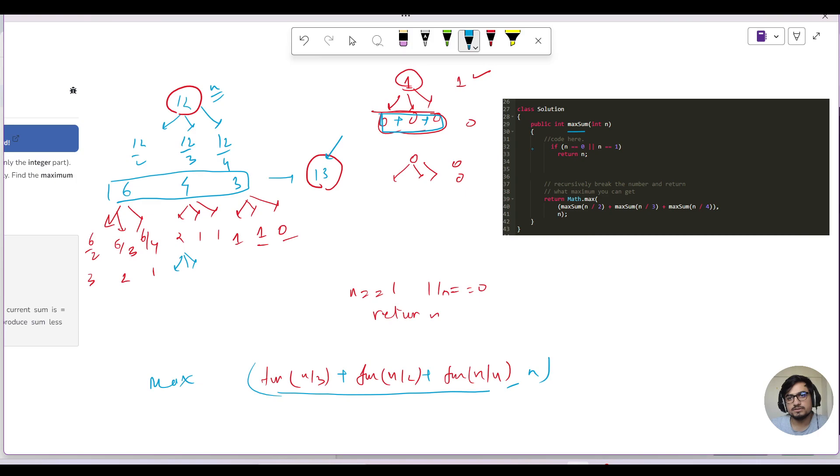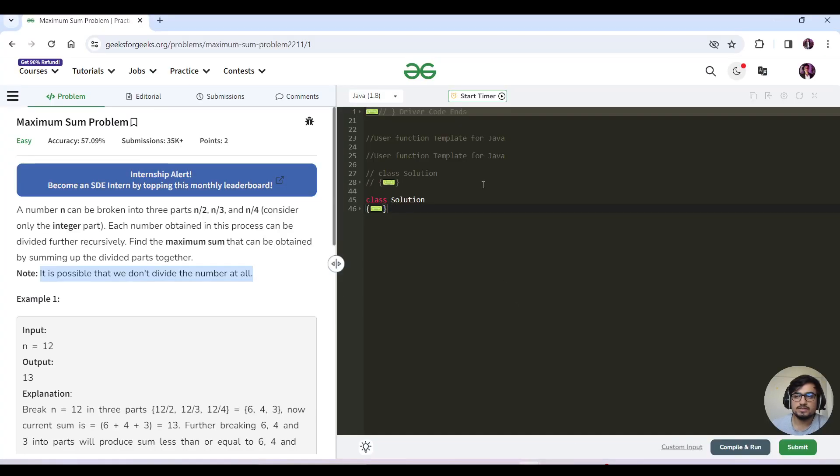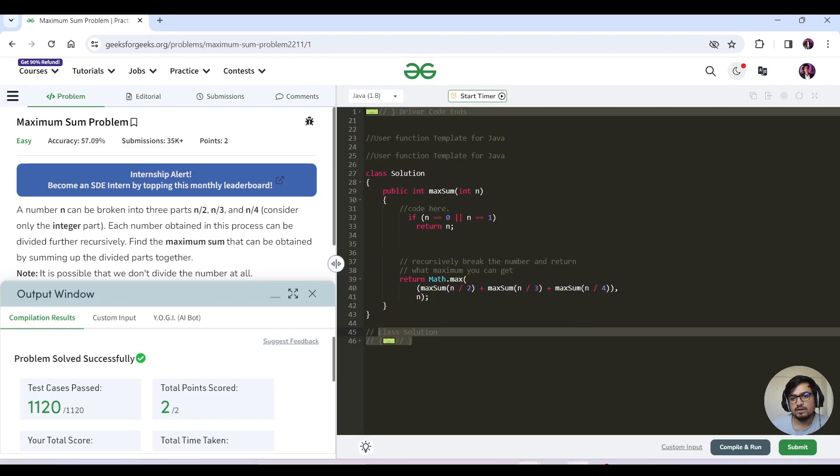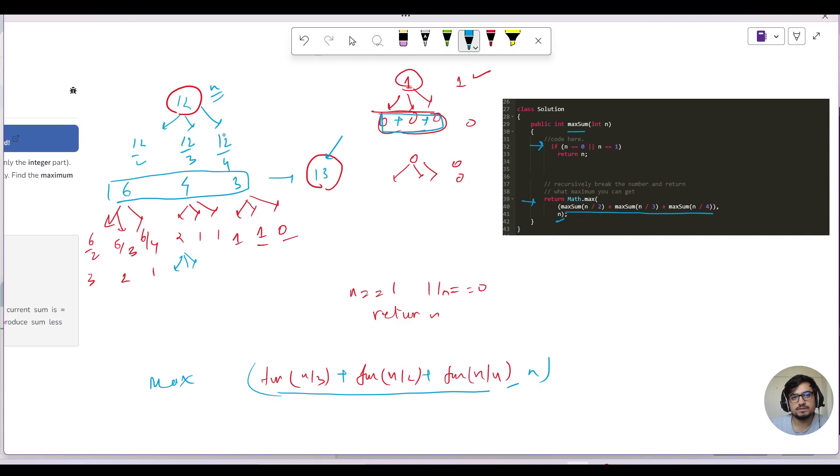So we have a maximum function. We return the base case, then we have a return math dot max. The first parameter is all the three calls in the summation form, and we compare it with the maximum or the current number. That is it. Let us see the code in action now. So here is the code for our brute force technique or the recursive approach. And what would be the time and space complexity? The time complexity would be, we are making three calls for an n, right? So for each and every n, it has three branches. So I will say 3 exponent n. Similarly, what would be the space? It would be O of n, the height of the recurrence tree.